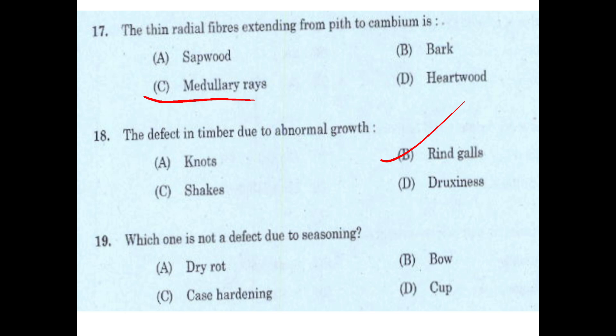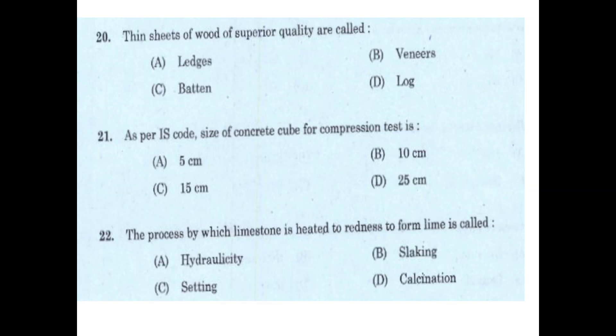Which one is not a defect due to seasoning? The answer is dry rot. Thin sheets of wood of superior quality are called — options are: lattice, veneer, batten, veneer. The answer is veneer.